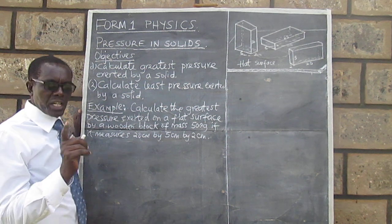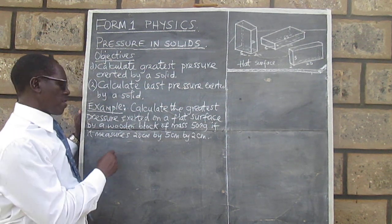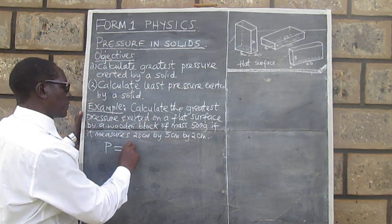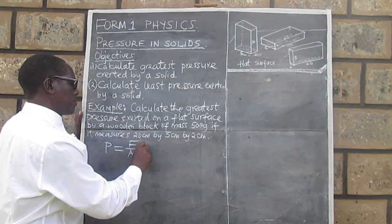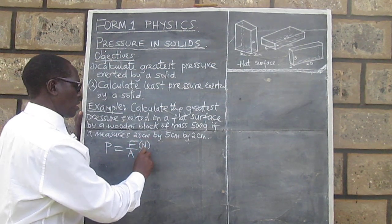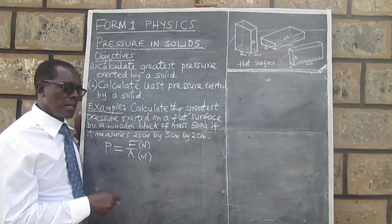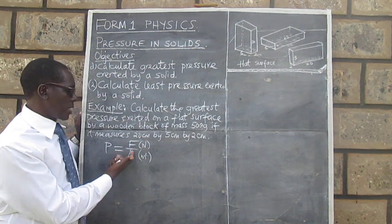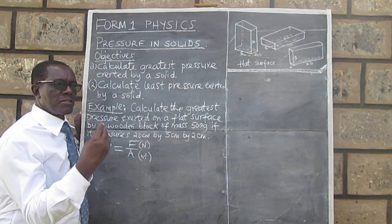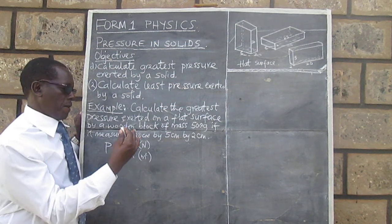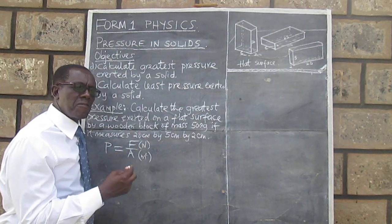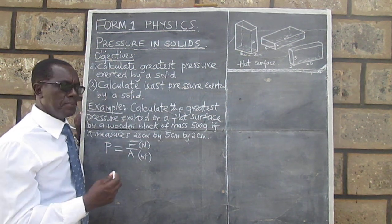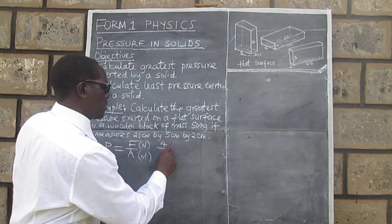For us to go through this, we need to recall something - the formula for pressure in solids: pressure equals force divided by area. We can see clearly that the formula for working out pressure in solids is actually a fraction, and that's why I would like us to bring to mind the knowledge of fractions that we have from our mathematics.